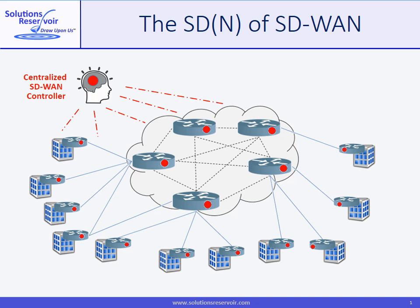Centralized intelligence can hide network complexity from the network operator. The operator can convey goals and policies to the controller, which translates them and undertakes the complex implementation, similar to how a compiler translates programming language into machine code. This orchestration, as it's called, considerably simplifies network operations.